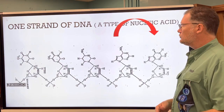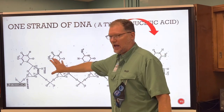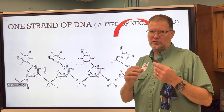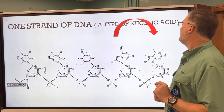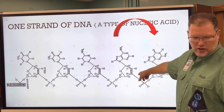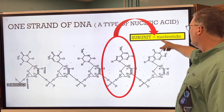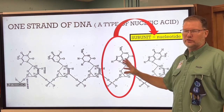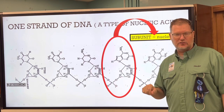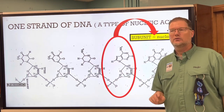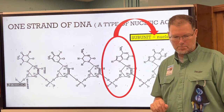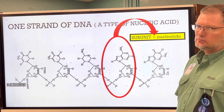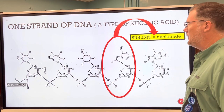The final one is one strand of DNA — deoxyribonucleic acid. You don't have to know what that is yet, but each subunit is called a nucleotide. We'll talk about those at the end of these notes in a few days — we're not going to get to these today.